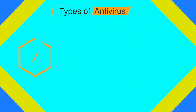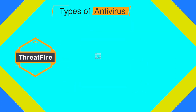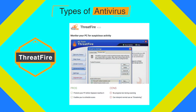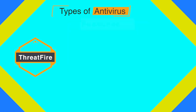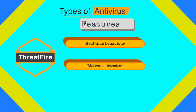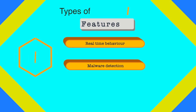The next antivirus is Threat Fire Light. It provides comprehensive protection against viruses, worms, trojans, spyware, rootkits, keyloggers, and buffer overflows. It features real-time behavior-based malware detection, as well as malware quarantine and removal.